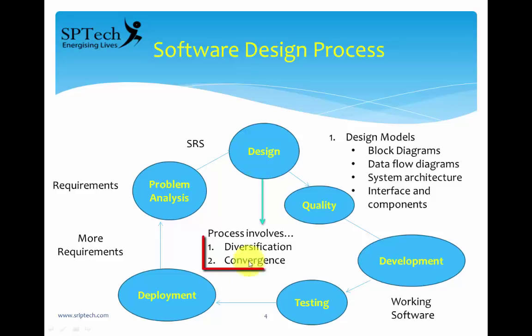The design process involves two things: diversification and convergence. We are doing a design to solve the problem, and it is a good idea to have more than one design — more than one solution — to a problem. You cannot create only one design and say that is the actual design you are going to implement. So we do diversification, which means proposing many types of design documents for a particular problem.